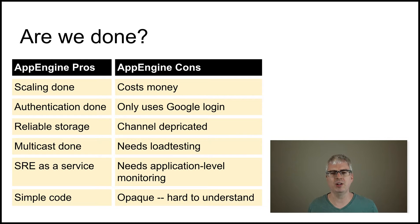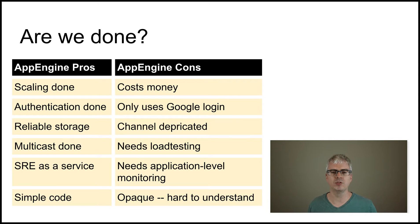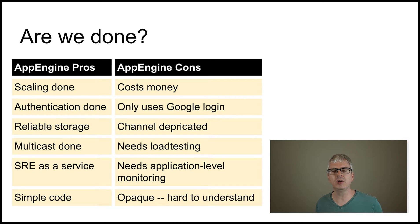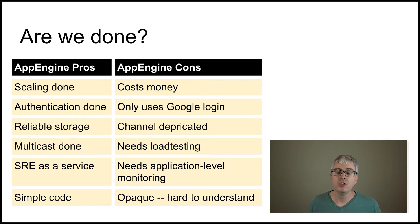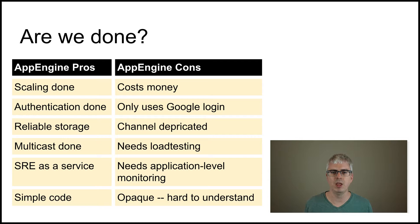But the most important challenge with this version of the chat application is it's fairly opaque. The App Engine infrastructure is doing a lot of the distributed systems work for us, and as a result we can't really see what's going on and we can't thoroughly understand it — which is against the purpose of this class. You want to really understand how the whole system works, and the only way to really understand it is to get your hands dirty and build it yourselves. So because of this, I went and wrote a second version of the distributed systems chat application.